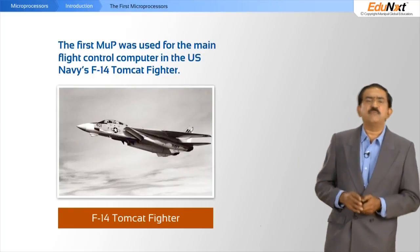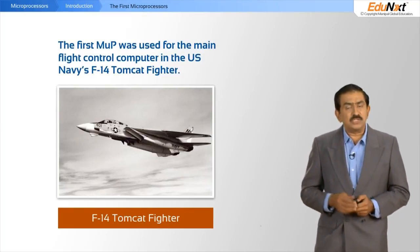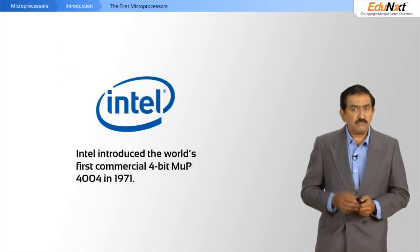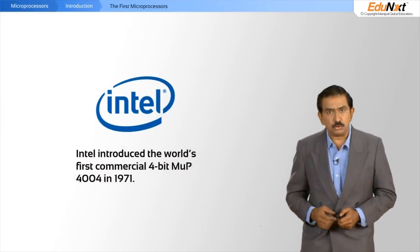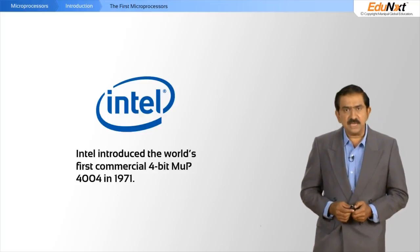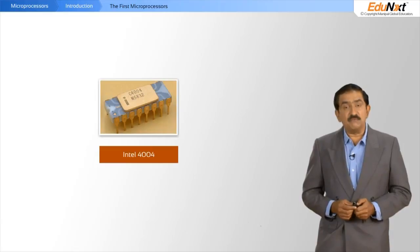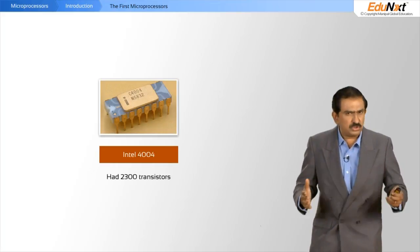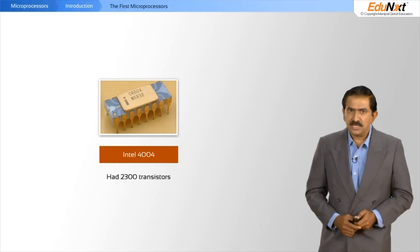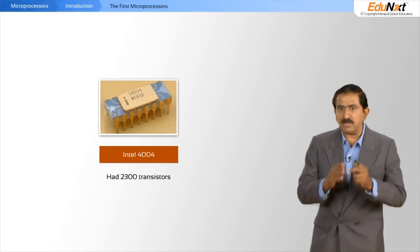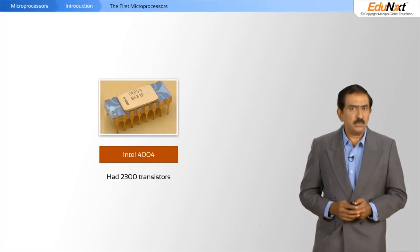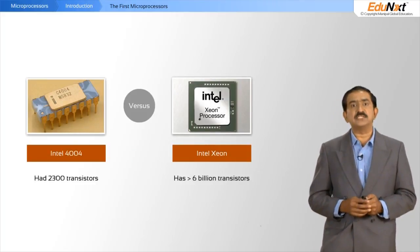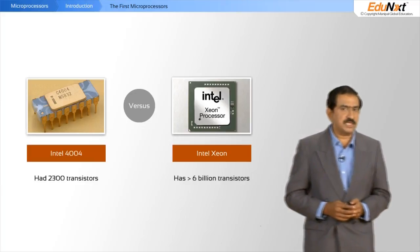Let us look at the history of microprocessors. The first microprocessor was really called the Tomcat and was made for the Department of Defense, USA. But the first world's commercially available microprocessor was the 4004, which came from Intel. It was a 4-bit processor and contained a grand total of 2,300 transistors. This was state of the art at that time — November 15th, 1971, when it was first launched. Today's processors have in excess of 6 billion transistors — that is the advance seen over the last 30 years.